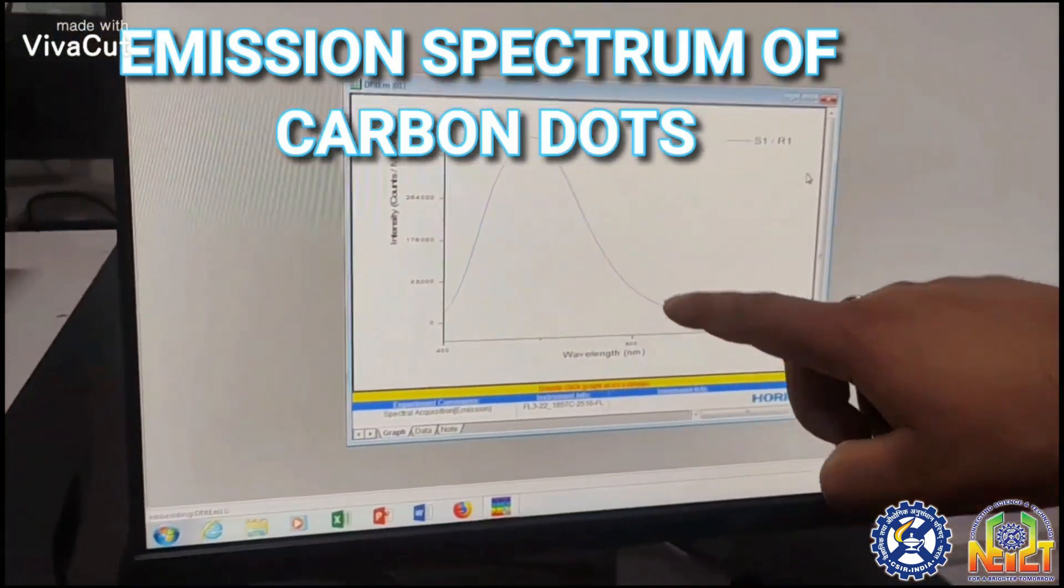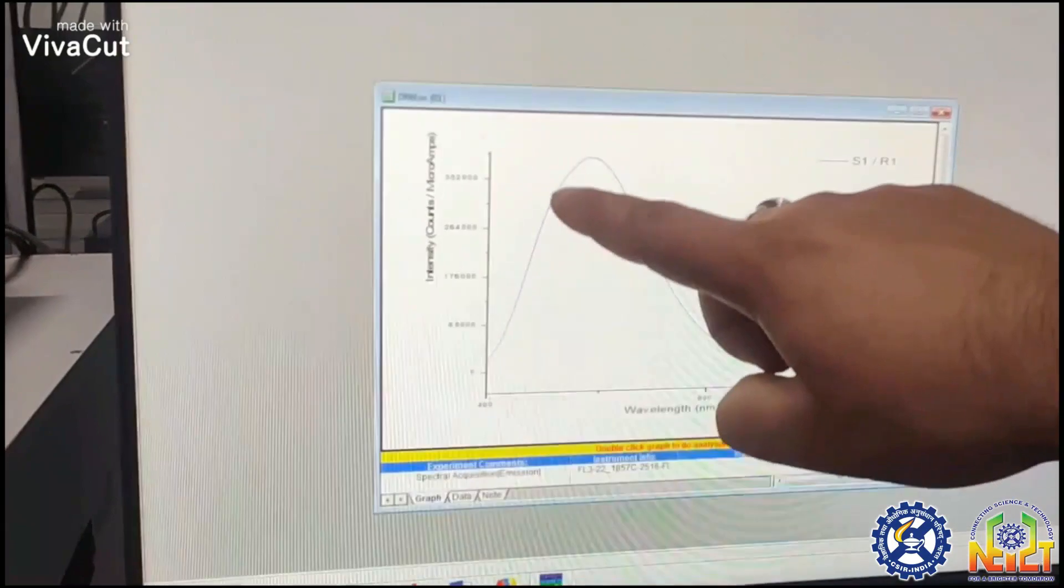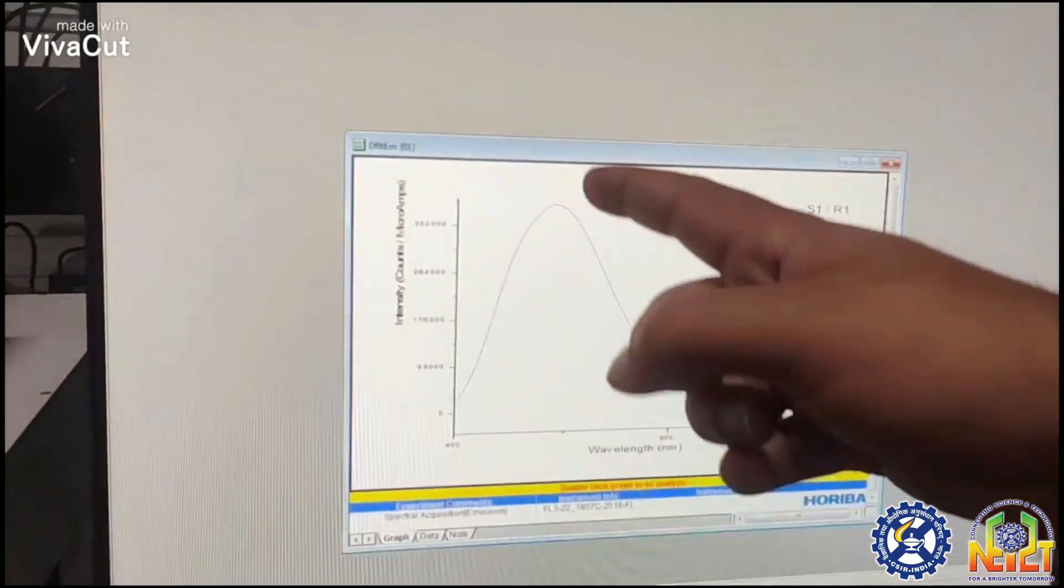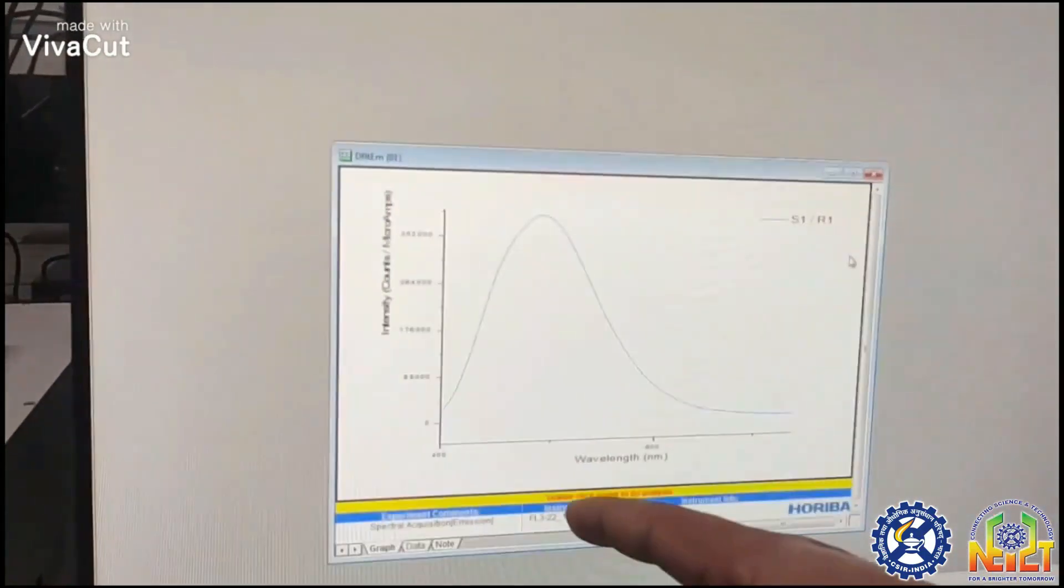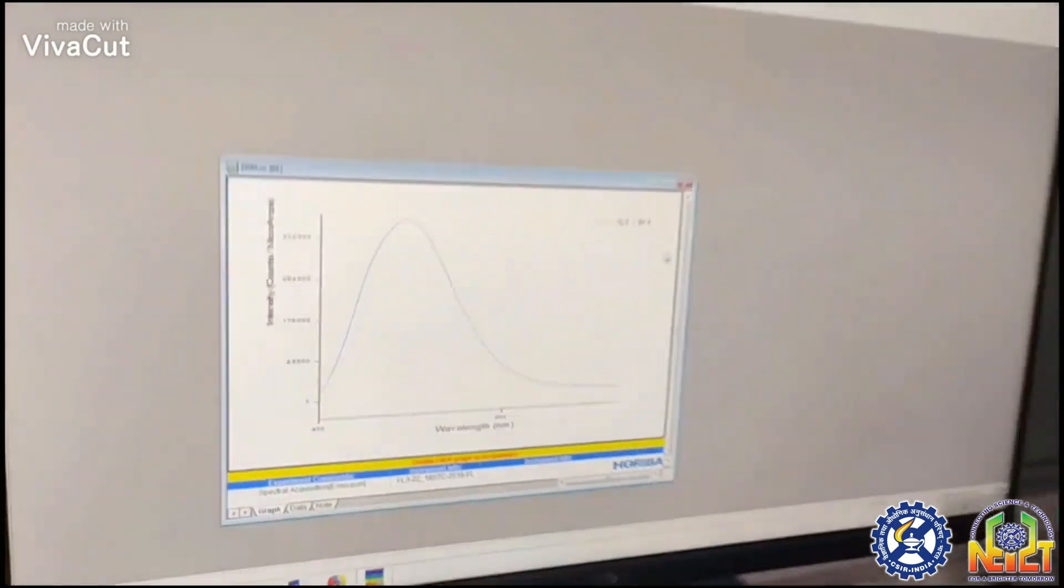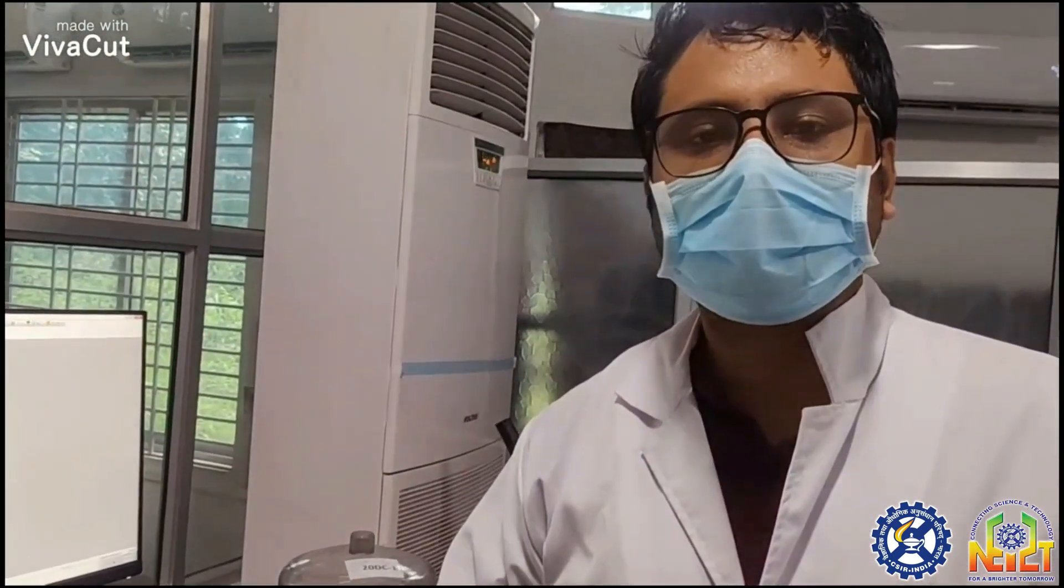This is the output spectrum. We can see light is emitted from 400 nanometers up to 600 nanometers, with the peak emission at 450 nanometers, which is the characteristic fingerprint of carbon dot material. In this manner, we perform the optical analysis of various materials by placing the sample in the compartment and obtaining the results.